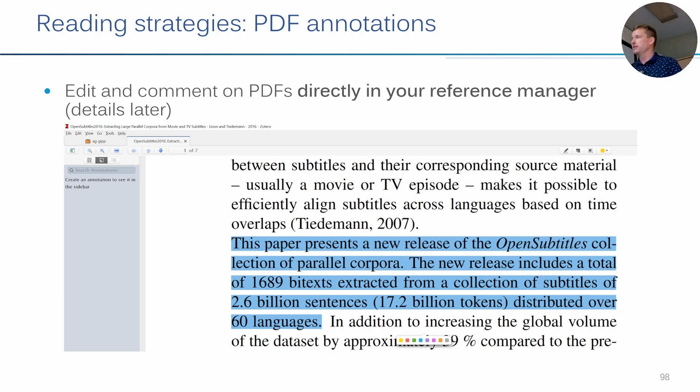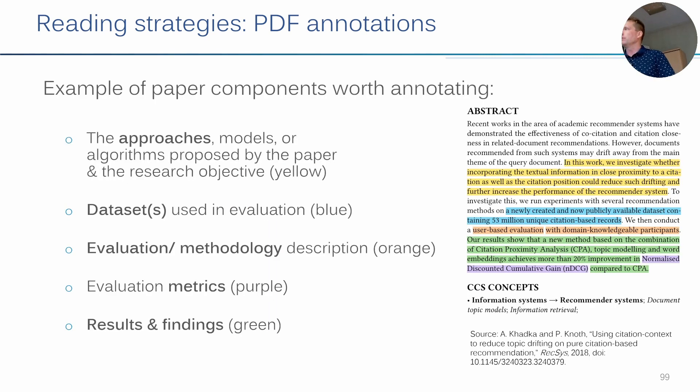So, we saw this one option that I showed you earlier with PDF annotations, different colors, which I really like in Zotero, that they offer you this possibility so easily. Default, out of the box, you can just pick a color. One option that, for example, Corinna, she put this slide here, uses herself, is you might, for example, use a color for the approaches, models, algorithms, research objectives, data sets, blue evaluation methodology, orange, or whatever. Make up your system and use it. It's pretty cool.